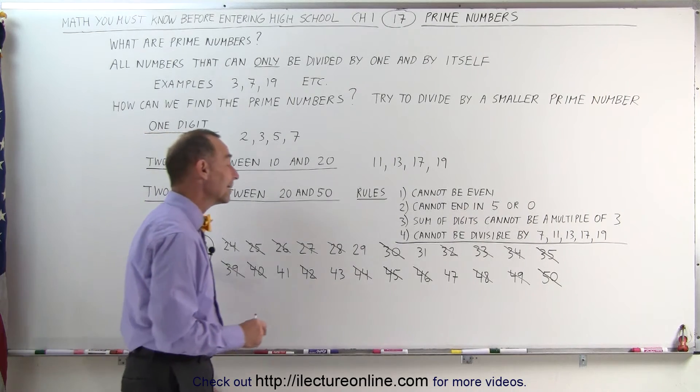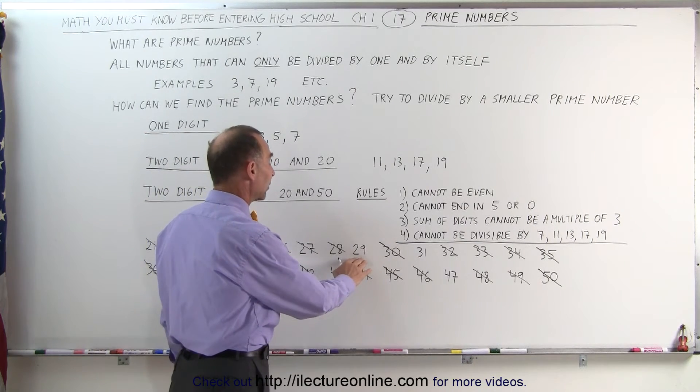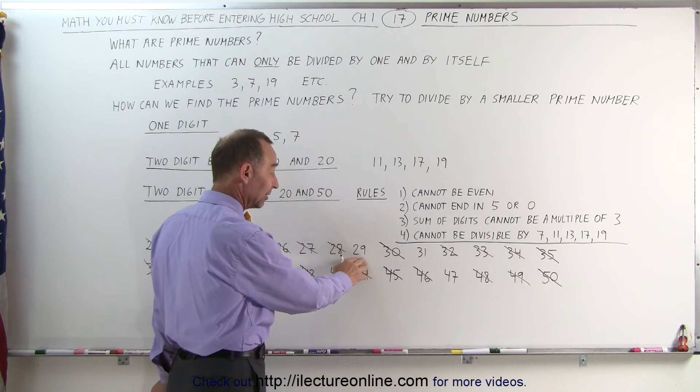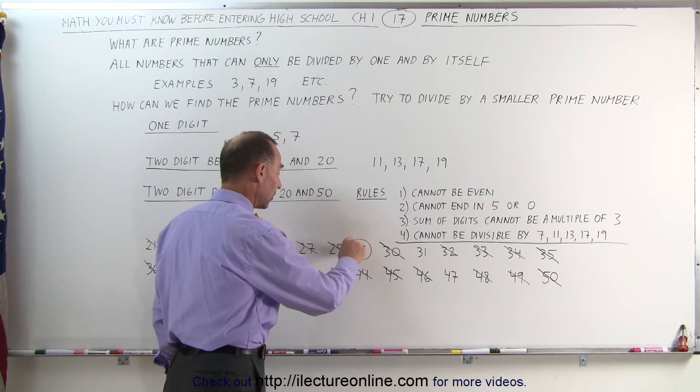Next, the number 29. Again, it cannot be divided by 2, 3, 4, 5, 6, 7, 8, 9, 10, 11. It's starting to look like a prime number. There's another one. 31, the same thing, cannot be divided by any of those small numbers. That's a prime number.